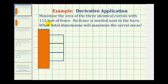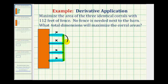We'll use the 112 feet of fence to make a fence along each of the sides here, as well as along here. Let's start by assigning variables for each of these lengths. Let's let each horizontal length equal x feet, so we have four segments each labeled x. For the vertical length, let's label this entire length y. We could label each smaller segment y, but doing it this way is going to make the work a little bit more manageable.